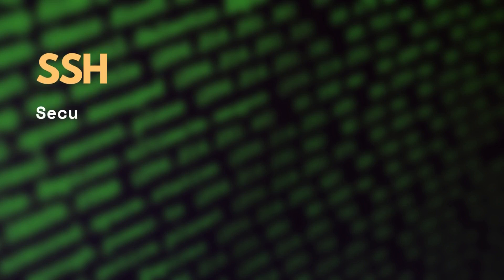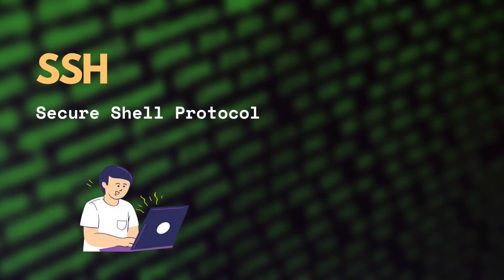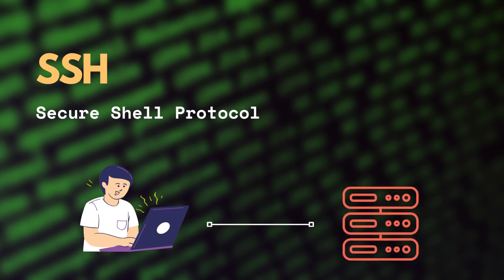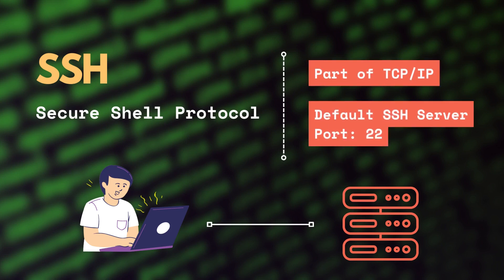SSH, or Secure Shell, is a secure method for two computers — a client and a server — to communicate with each other over encrypted channels. The SSH protocol is one of the protocols defined under TCP. The default port number for SSH connections on a server is 22.